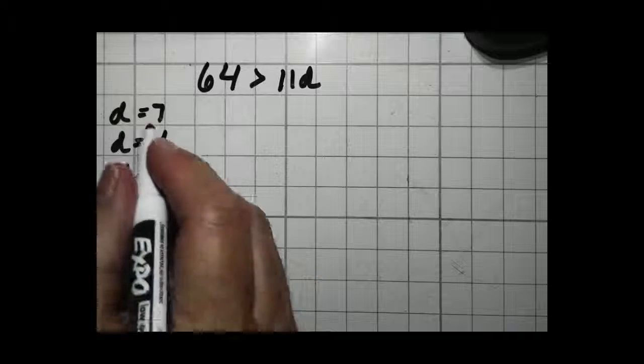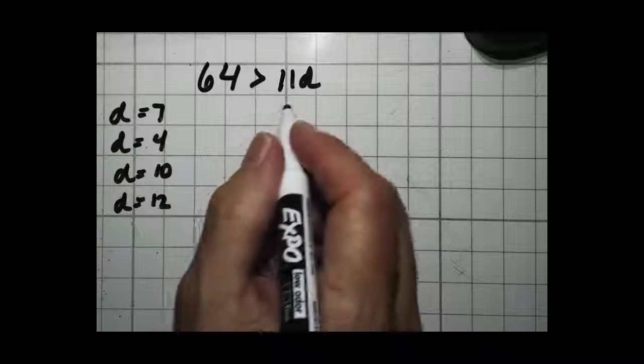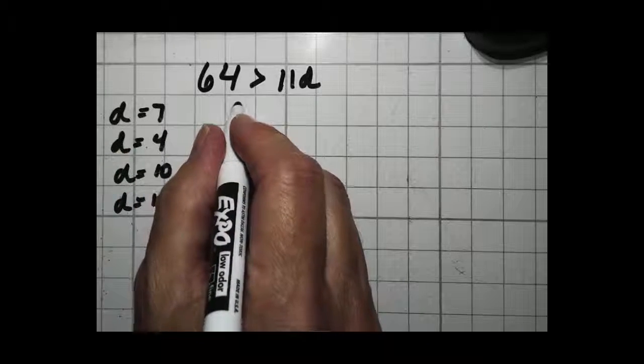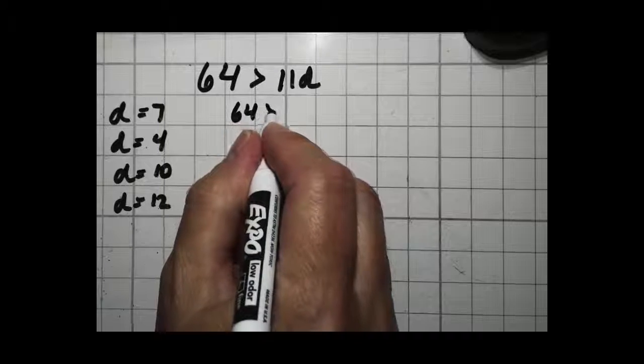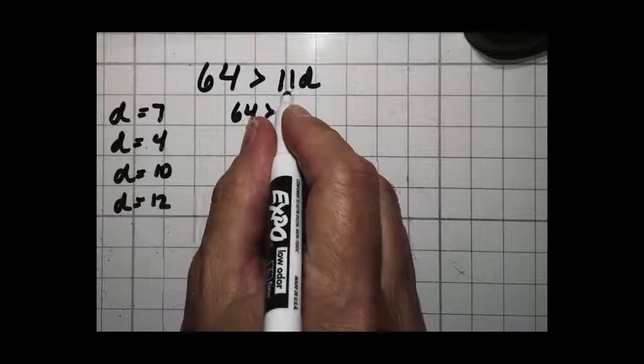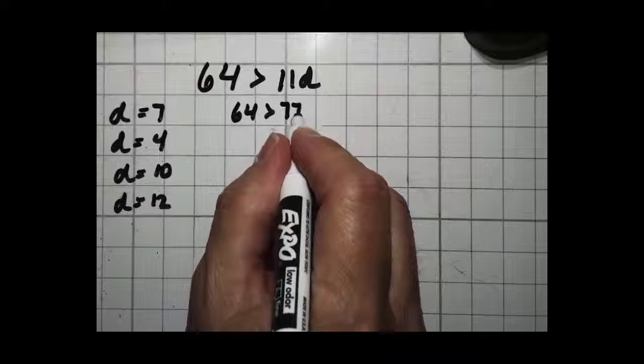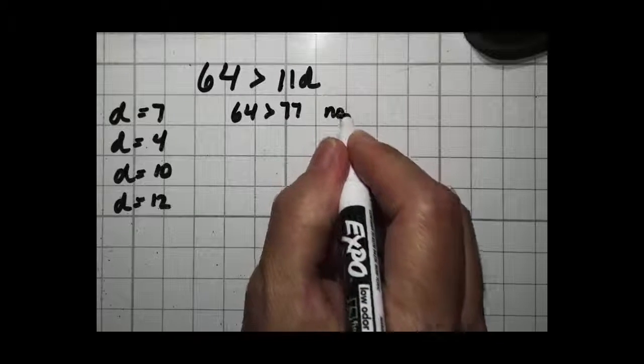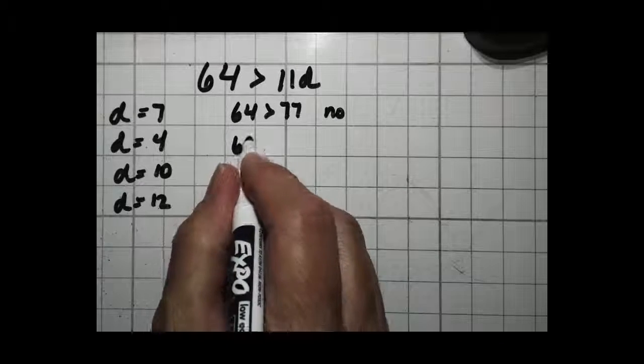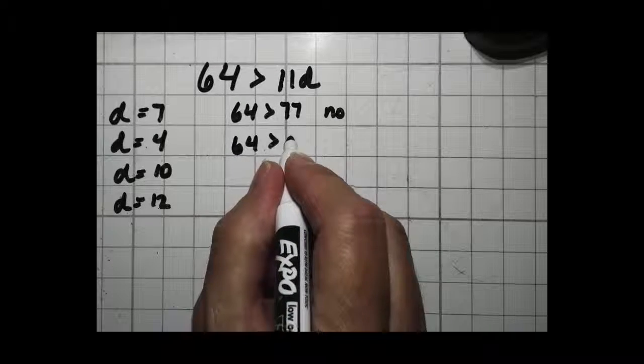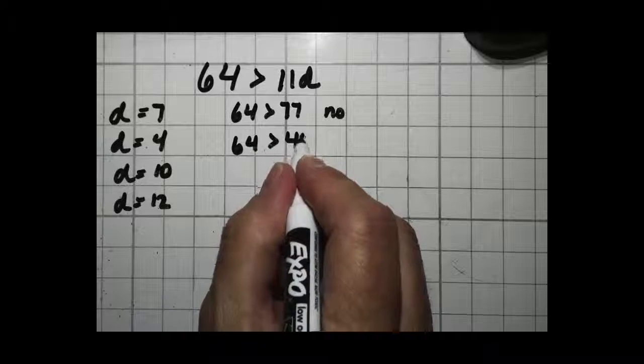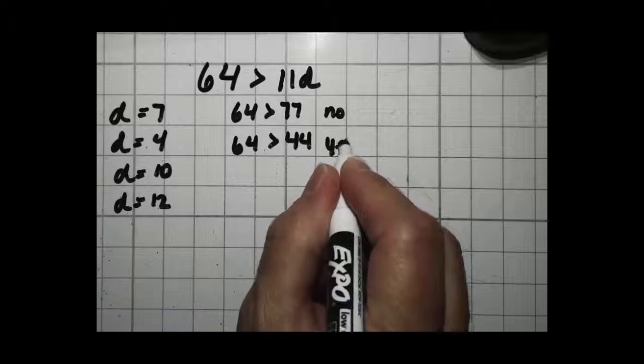The easiest way that I have found to do it is simply plug this number in for d. So 64, is that greater than 7 times 11 or 77? No, it's less. 64, is that greater than 11 times 4 or 44? Yes, it is.